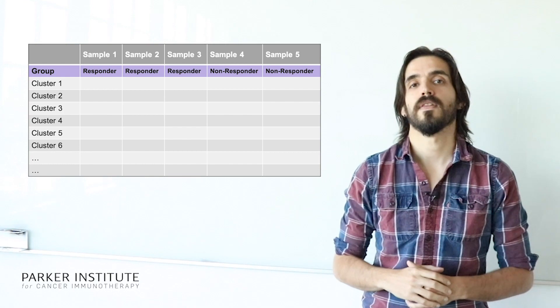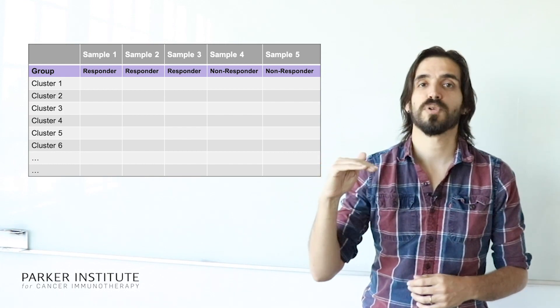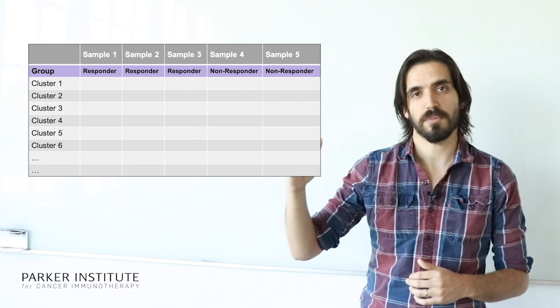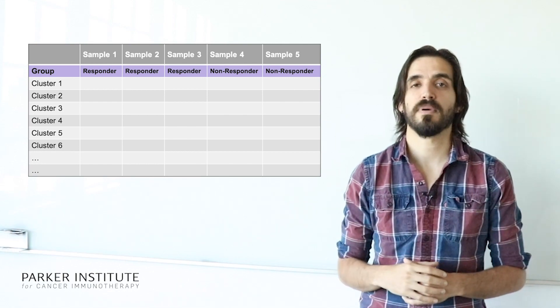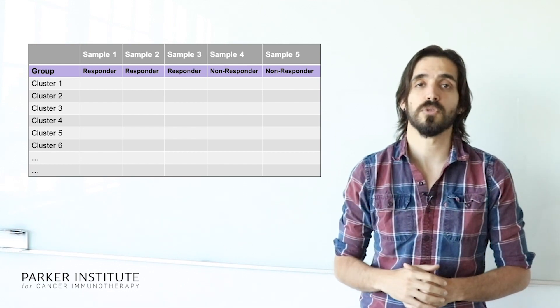If you use clustering, then you can build a matrix like this one, where every row represents a separate cluster, and every column represents a separate sample, and the values in this matrix represent the abundance of each cluster in any individual sample.